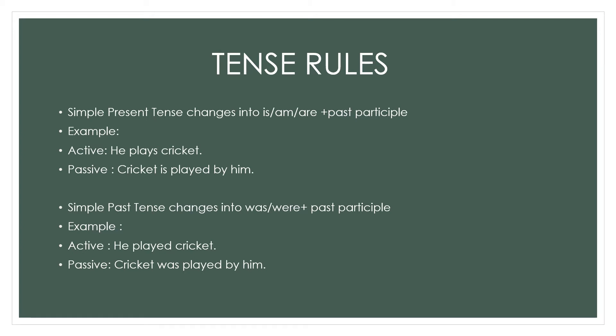The second tense rule: simple past tense. If I want to change it to passive voice — yes, it is possible. It will change to was/were plus past participle. So here we have: 'Cricket was played by him.'